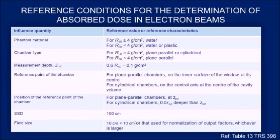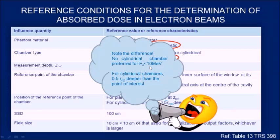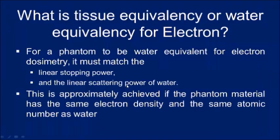SSD should be 100 cm and field size is usually 10×10 or the field size used as reference for output factors. Please note: no cylindrical chamber is preferred for less than 10 MeV, and for cylindrical chambers the position should be 0.5R deeper than the point of interest Z_ref.